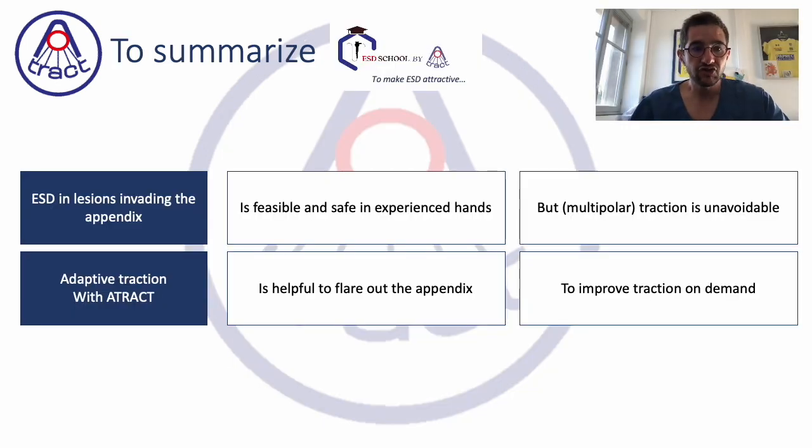So ESD in lesions invading the appendix seems to be feasible and safe, but for experienced hands. It's not a good way to begin ESD. Traction is absolutely unavoidable, and probably multipolar and adaptive traction are very helpful because they help to flare out the appendix and improve traction in the deep part.